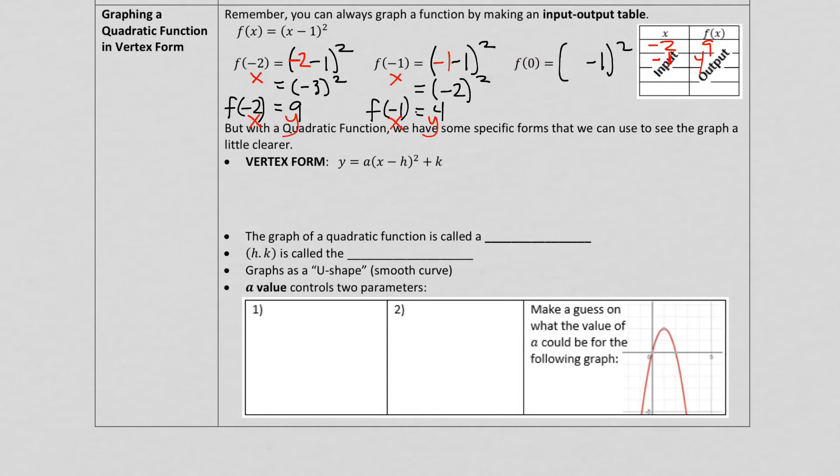And I can do this over and over again and find more and more points. So here, f of 0, I can plug in 0 in place of x and work it out. 0 minus 1 is minus 1. And then minus 1 quantity squared is going to be positive 1. So f of 0 represents the point when x is 0, y is 1.